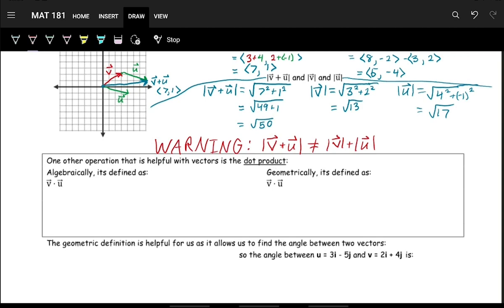One way is to use the dot product. So if we have v and u, let's say v is equal to (a,b) and u is equal to (c,d).